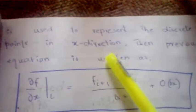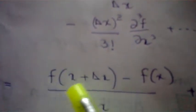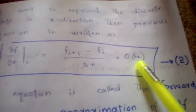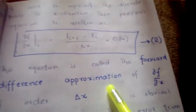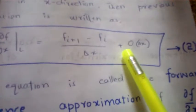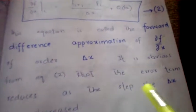Now we introduce the subscript index i, which is used to represent discrete points in the x-direction. Replacing f(x + Δx) with f_{i+1} and f(x) with f_i, we get: ∂f/∂x |_i = (f_{i+1} − f_i) / Δx + O(Δx). This equation is called the Forward Difference Approximation of ∂f/∂x, and its order is O(Δx).